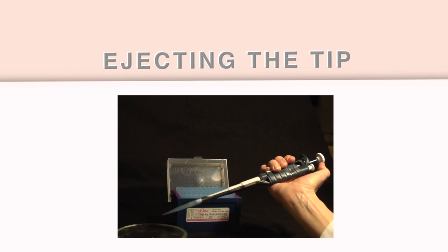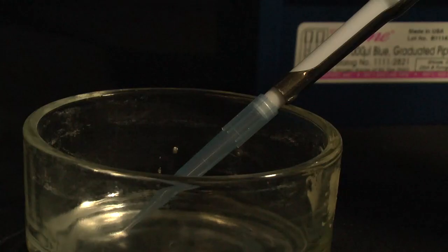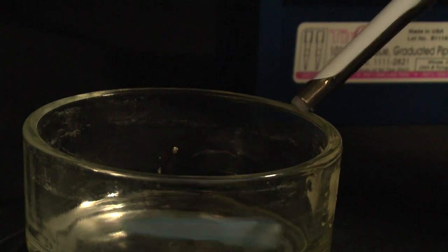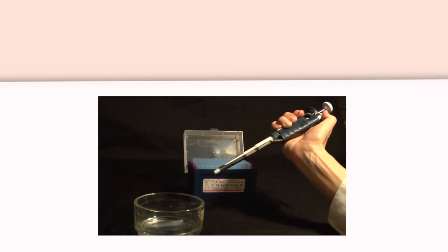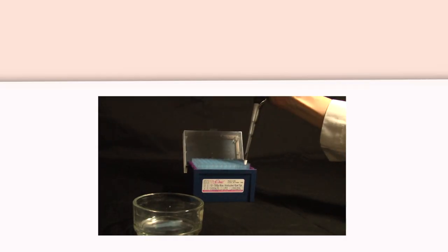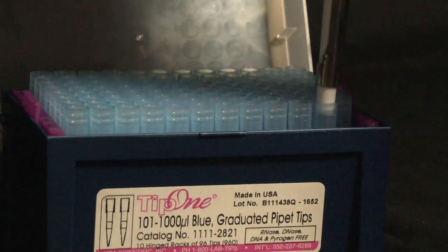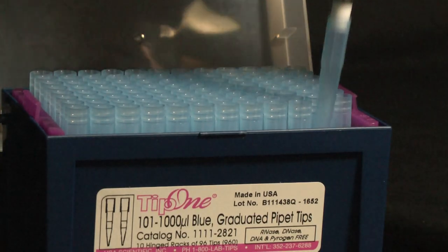To eject the tip, press the tip ejector button that sits next to the plunger. Use a new tip for each new volume dispensing. It prevents cross-contamination of cultures and reagents.